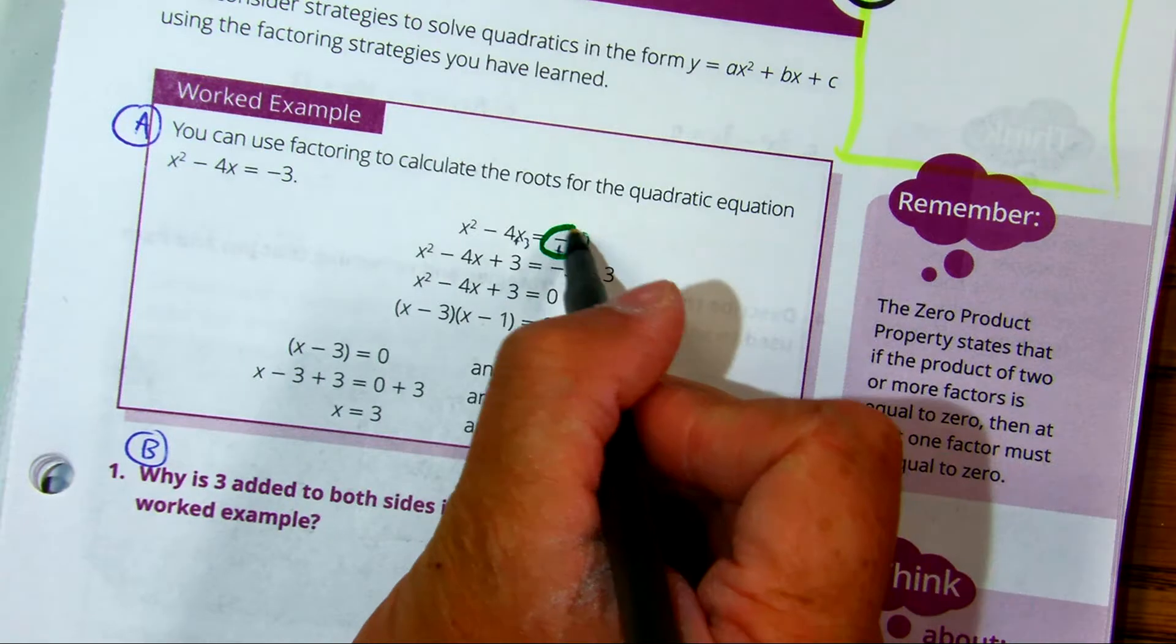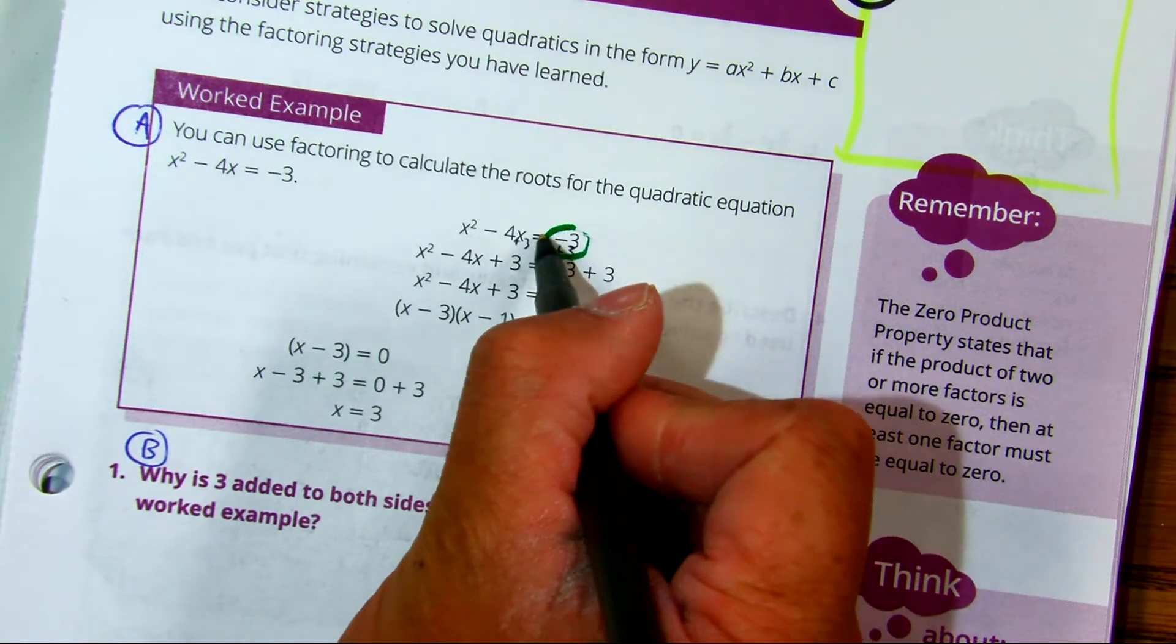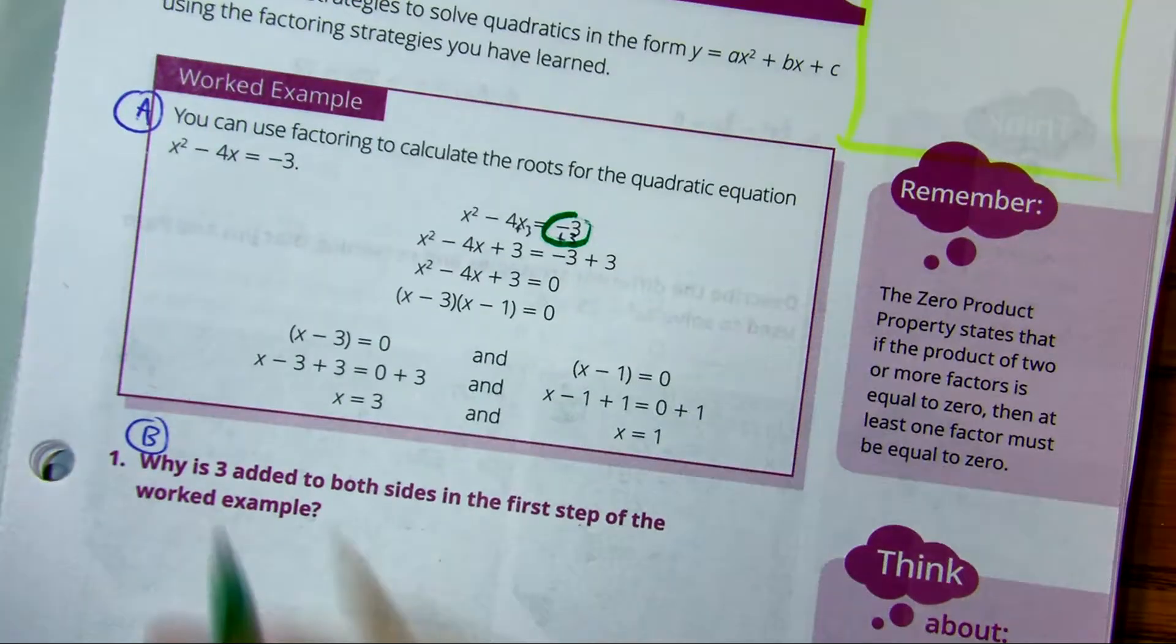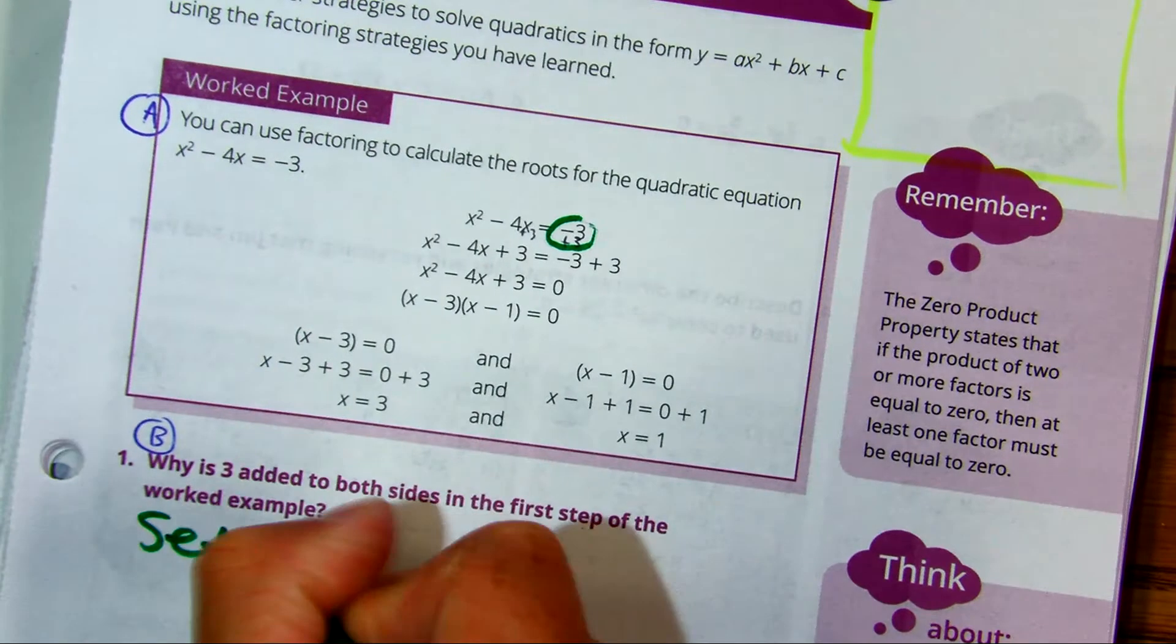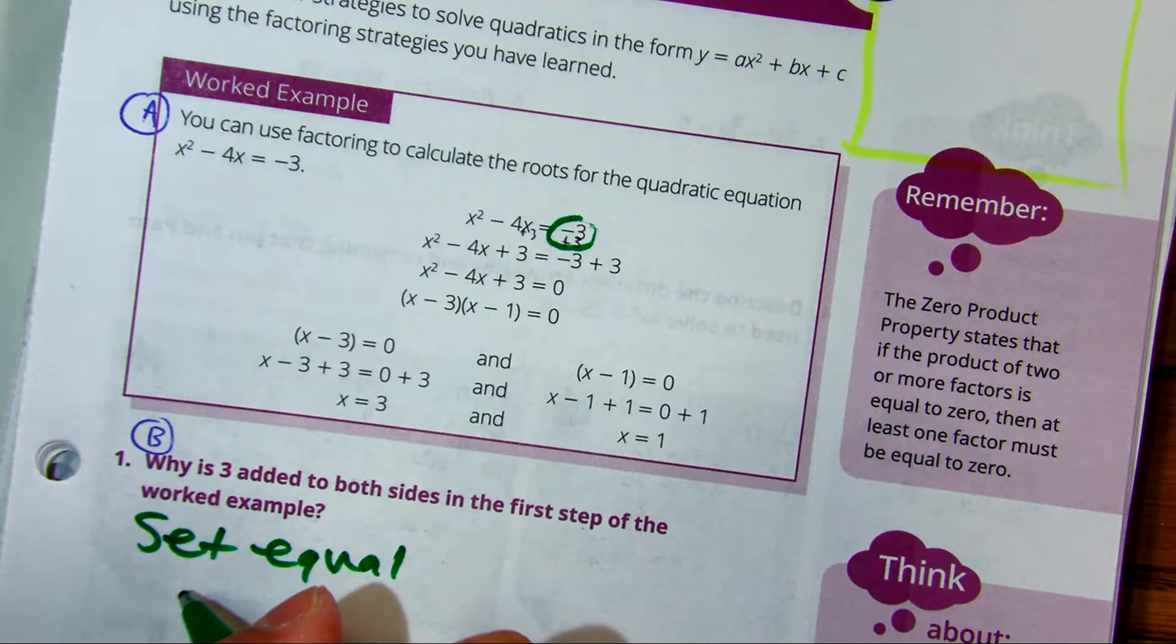Yeah, because when you add them, it equals what number? What number? Set equal to what number class? Zero.